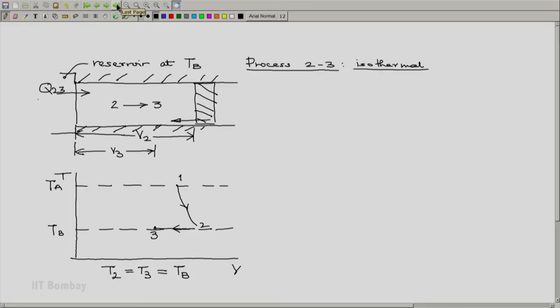Now let us go to process 2-3, the second process. It is an isothermal compression process. We know that when we apply first law to a small part of this process, we will get dQ equals dE plus dW.